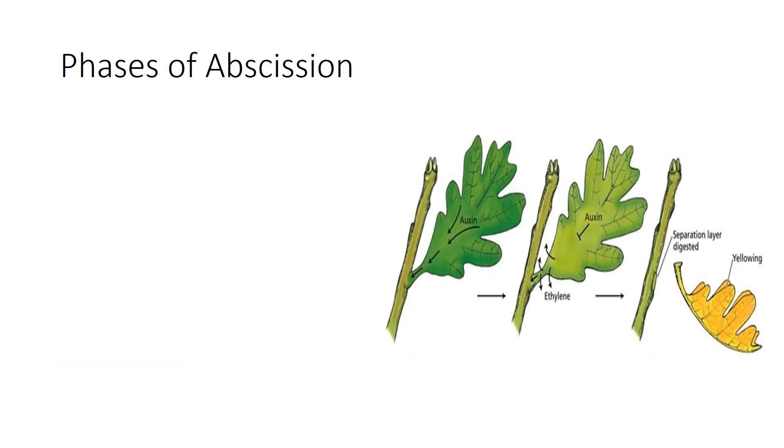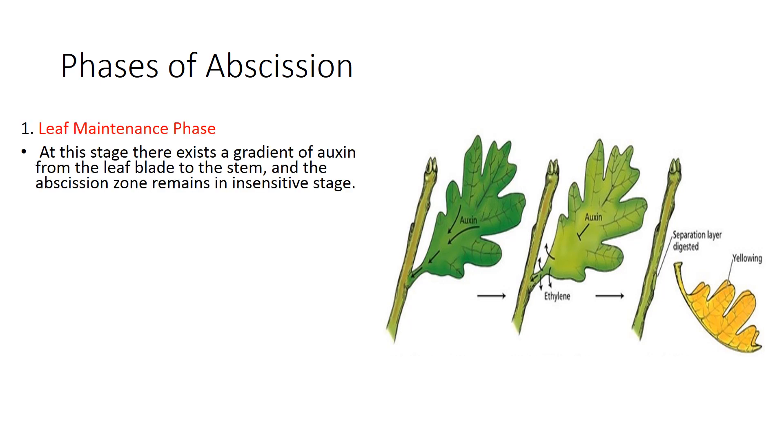So there are three phases of abscission. The first phase is leaf maintenance phase. By the term you can see that leaf remains intact with the stem portion. This is the stem portion, and this is the petiolar region, and this layer is known as the abscission layer or abscission zone. These are the veins and this portion is the leaf blade. Here, auxin synthesis and production is very high during the younger stage of the leaf, so it forms a gradient from the leaf blade to the stem, which has lower auxin synthesis. And this abscission zone remains insensitive to ethylene because of this higher auxin gradient.